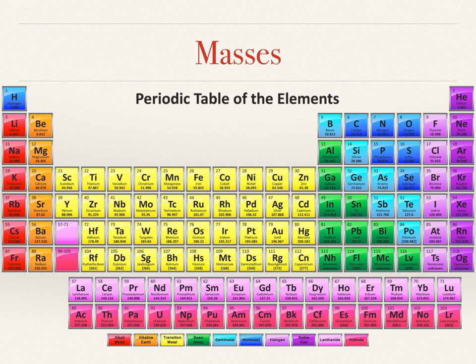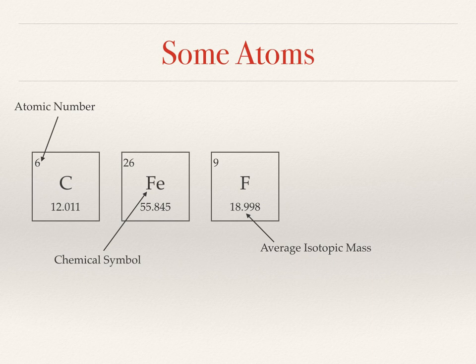Let's have a quick recap of the periodic table. As well as the symbol for each element, we can see numbers: the atomic number, which is the number of protons in the nucleus. It's the number of protons that tell you the difference between elements — when you change the number of protons you change the element. The other number is the average isotopic mass: if you take this number of grams of the element you'll have one mole of it. For example, if you have 18.998 grams of fluorine you have one mole of fluorine.